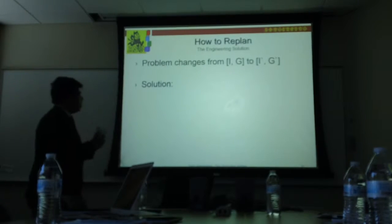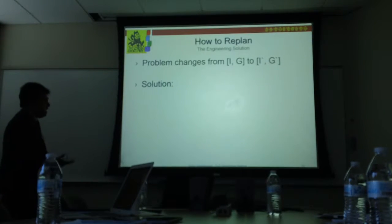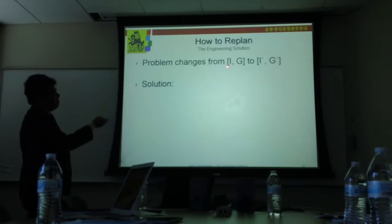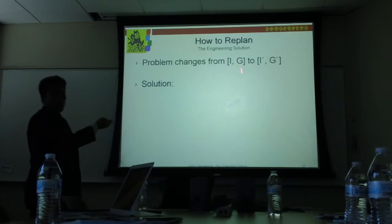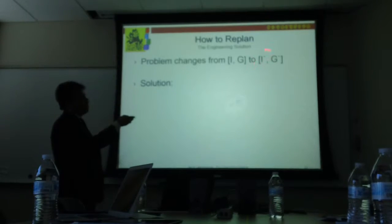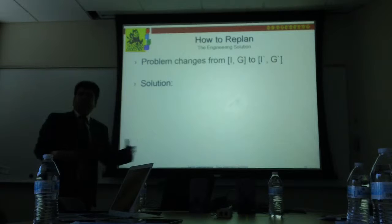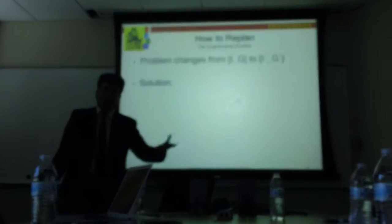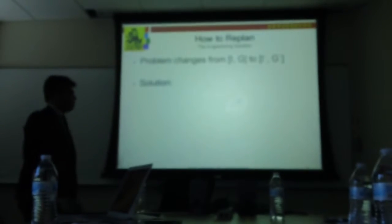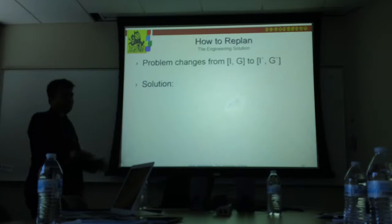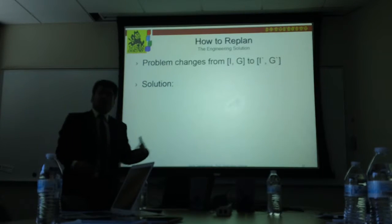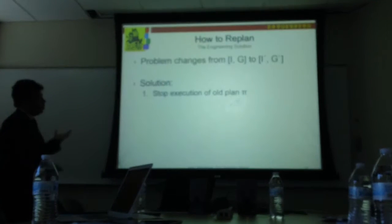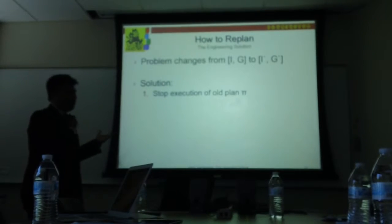In order to support replanning, you have an initial problem denoted by the initial state and the goals. That changes — your state might change because you have new objects, new information coming in from your sensors, and sometimes your goals may change as well. The human may say here's an elaboration on your goal.